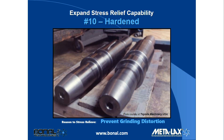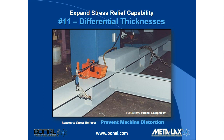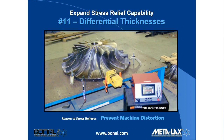The eleventh way to expand stress relief capability is treating parts with differential thicknesses. This example from Bonal shows a channel that has a quarter-inch wall thickness welded very close to a six-to-seven-inch-thick block that needs to be stress relieved. To heat treat stress relief this would be an absolute nightmare — the result would be either severe distortion or partial stress relief of the block. Yet it's just routine for a Metalax application. The reason for stress relief is to prevent machine distortion.